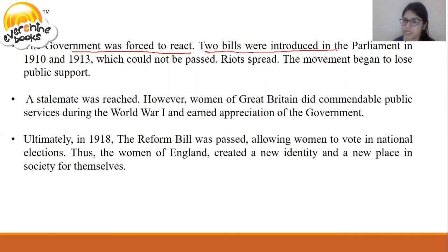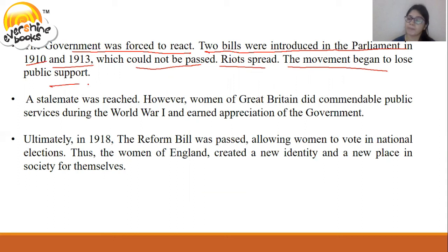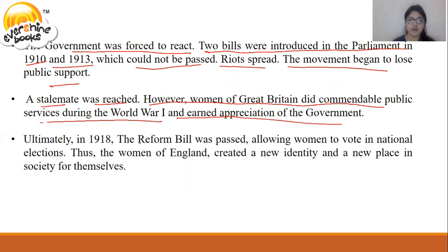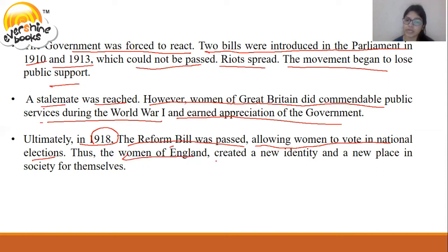Two bills were introduced in parliament in 1910 and 1913, but could not be passed. A stalemate was reached. However, women of Great Britain did commendable public service during World War I and earned the appreciation of the government. Ultimately, in 1918, the reform bill was passed, allowing women to vote in national elections. Thus, the women of England created a new identity and a new place in society for themselves.